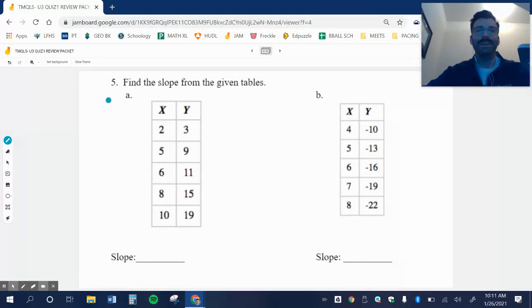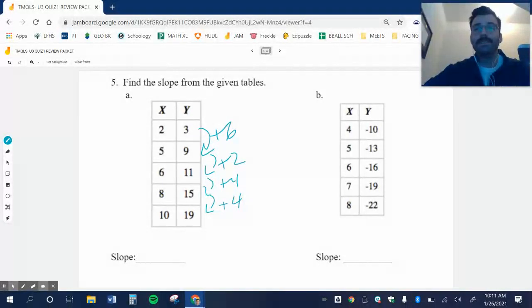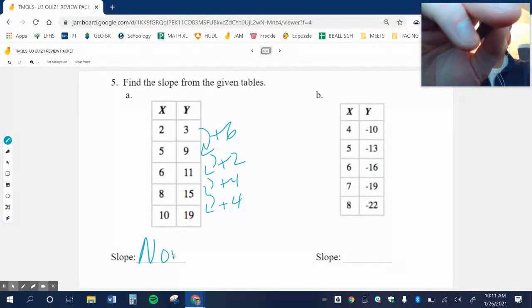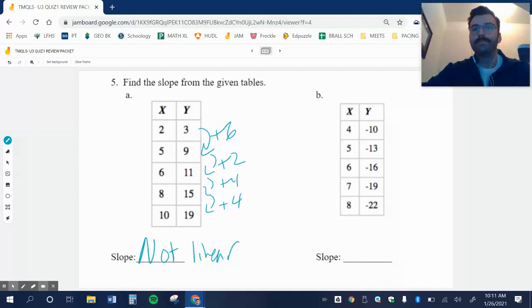Find the slope on the tables. Here we go. Let's see if there is a slope. So I'm going plus 6. I'm going plus 2. I'm going plus 4. I'm going plus 4. This is not linear. So there isn't a slope. It's not consistent.